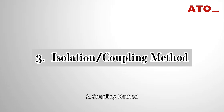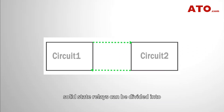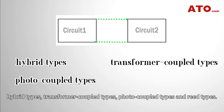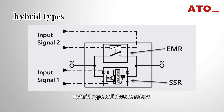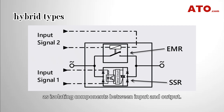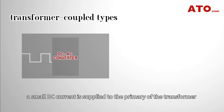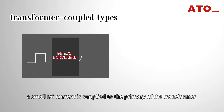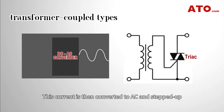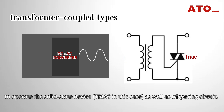3. Coupling Method. In light of coupling method, solid-state relays can be divided into hybrid types, transformer-coupled types, photocoupled types, and reed types. Hybrid-type solid-state relays employ reed switches or miniature electromagnetic relays as isolating components between input and output. In transformer-coupled SSR, a small DC current is supplied to the primary of the transformer through a DC to AC converter, which is then converted to AC and stepped up to operate the solid-state device as well as the triggering circuit.